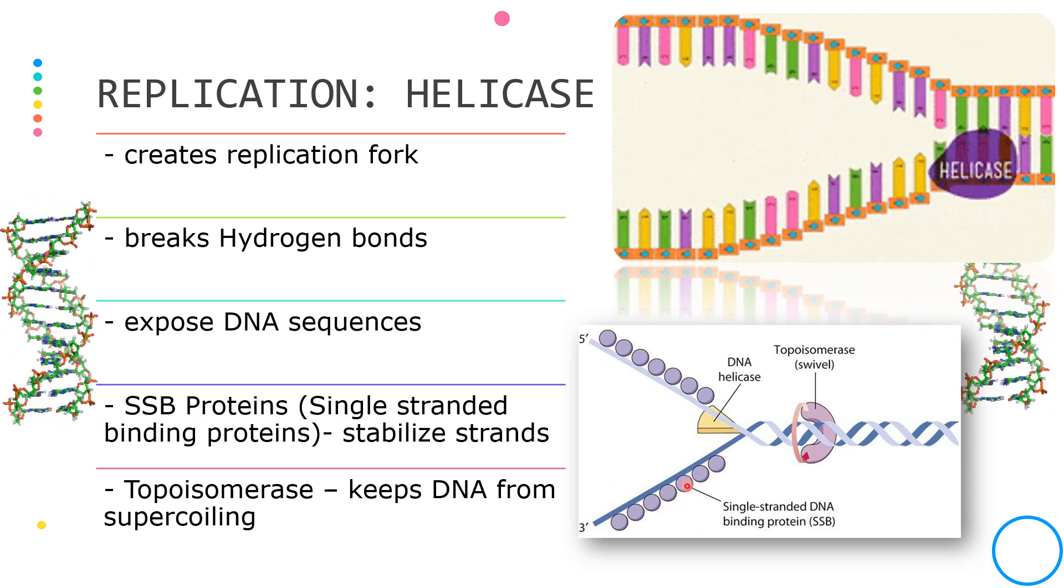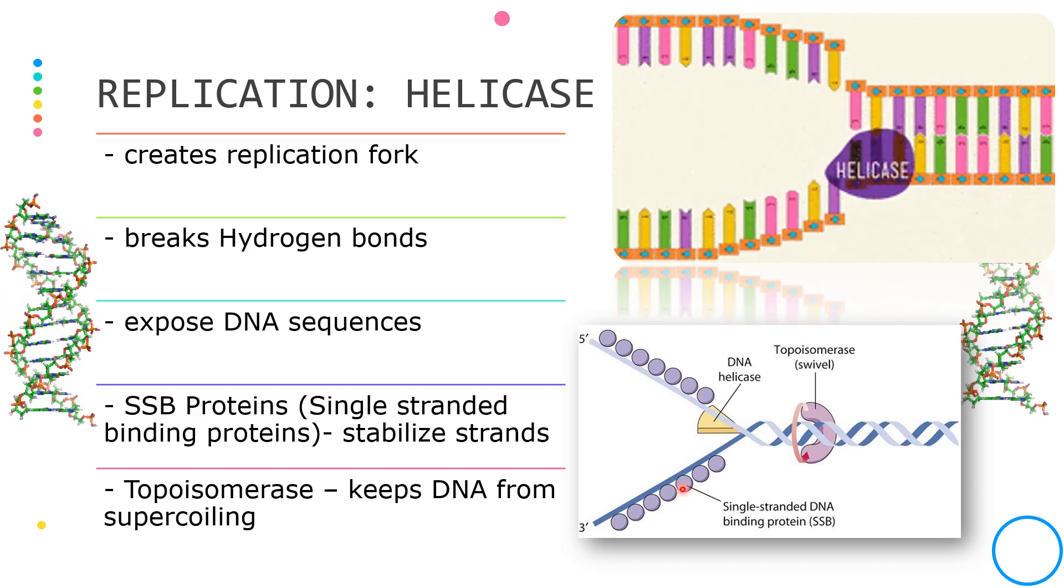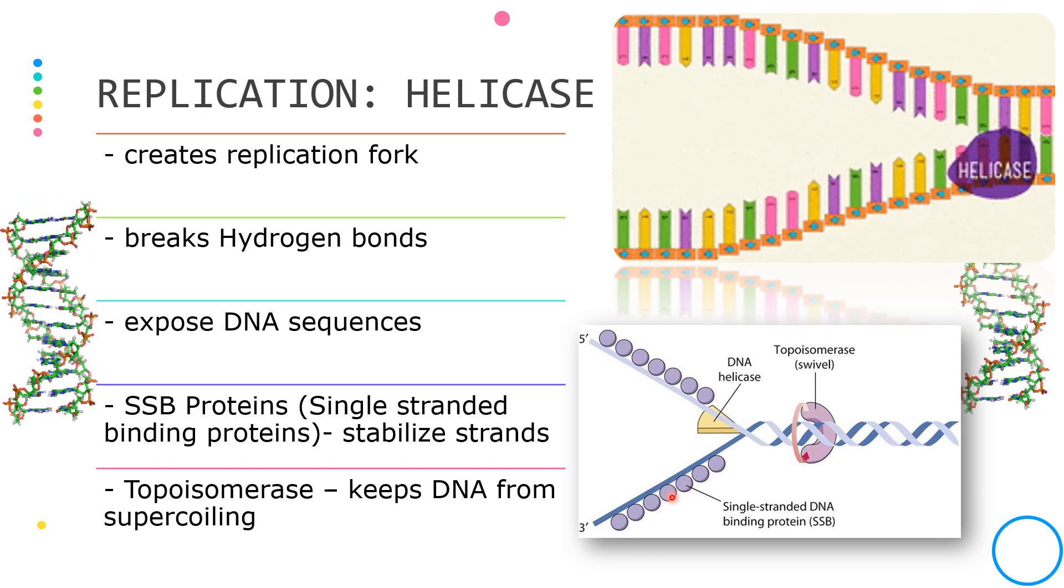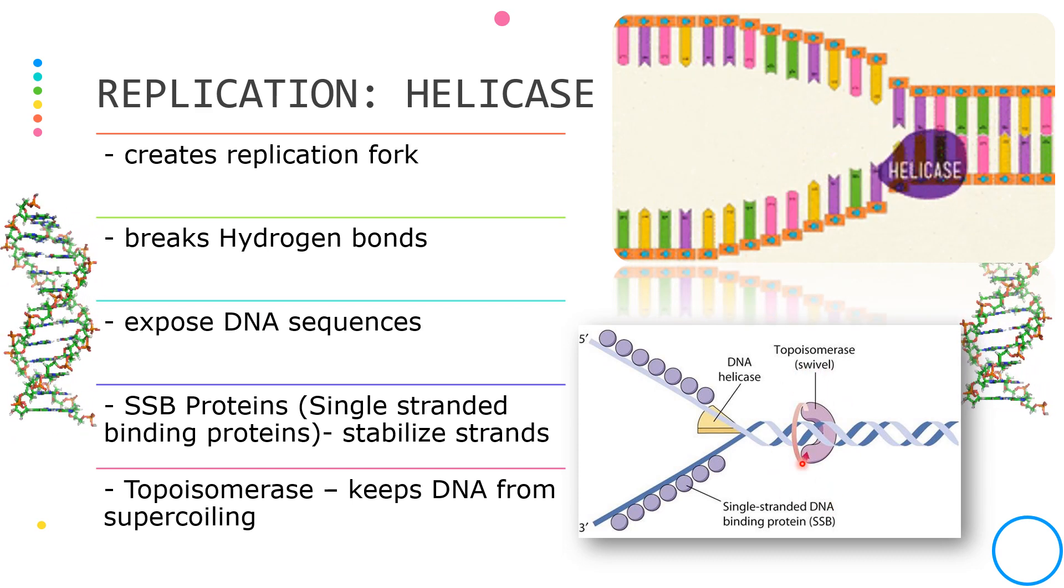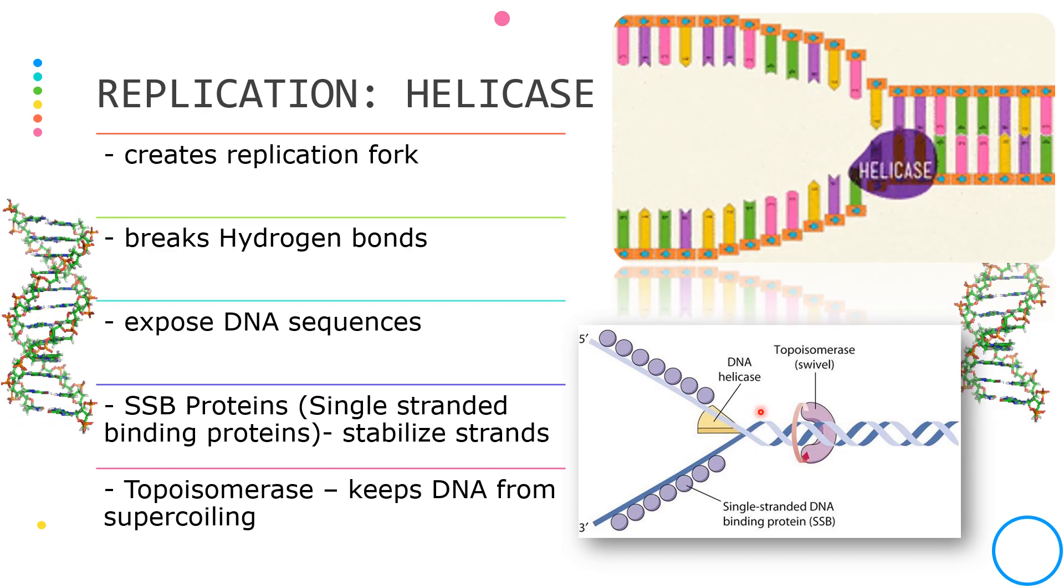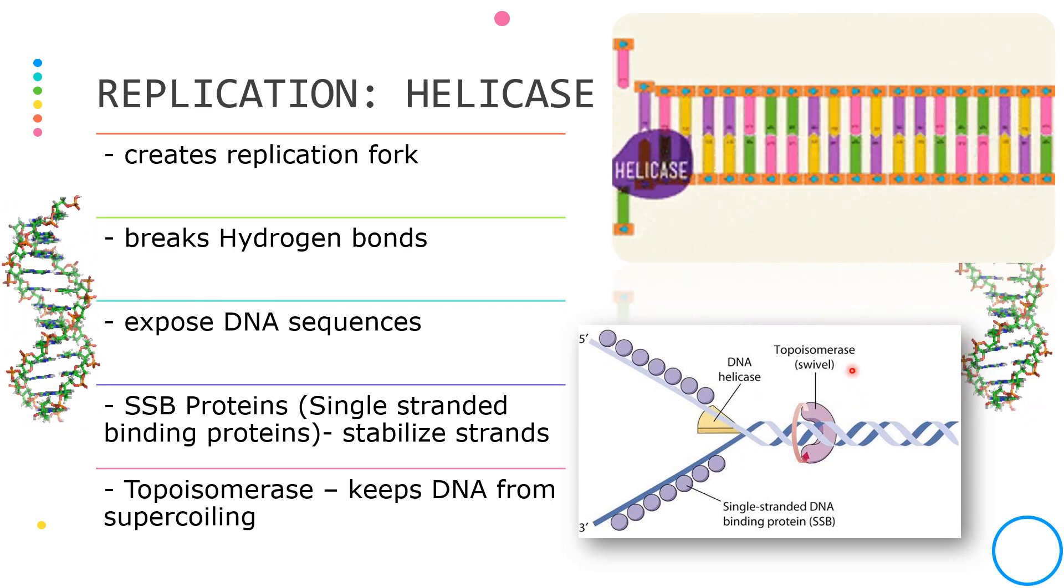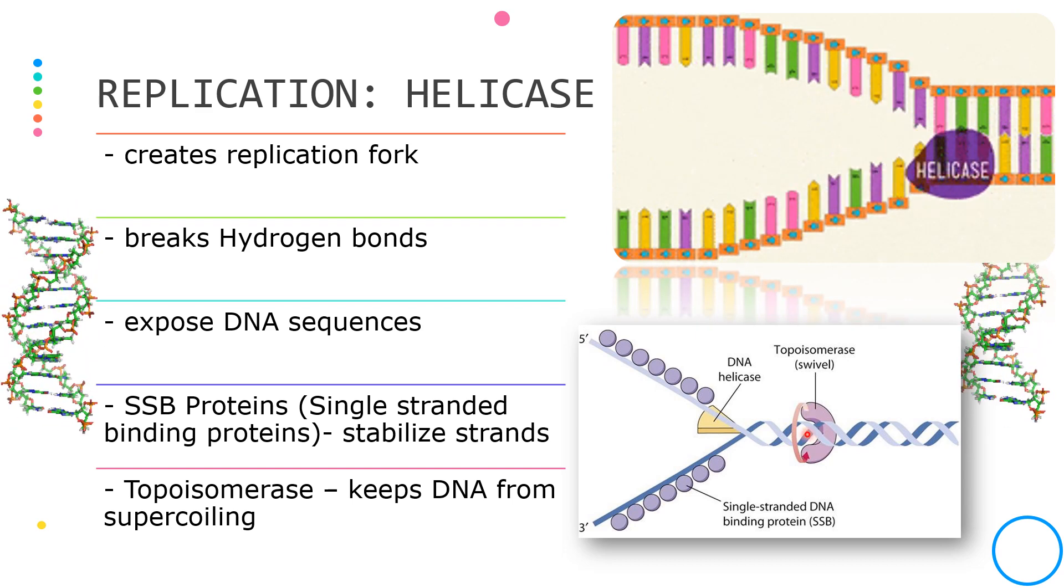They stabilize the strands and prevent them from annealing or from winding back together. Another enzyme that helps in this process is the topoisomerase. The topoisomerase relieves the stress generated by the unwinding of the DNA. The purpose of this is to keep the DNA from supercoiling or from overwinding.